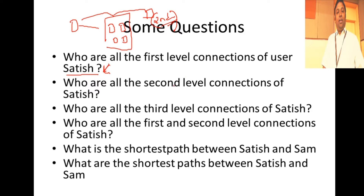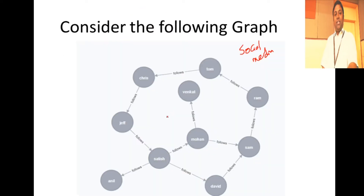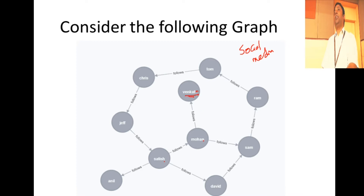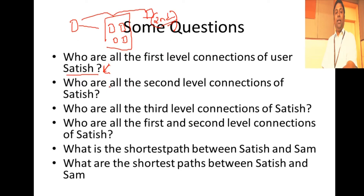What do we mean by second level connection? Satish follows Mohan; Mohan follows Venkat — so Venkat is a second level connection. Mohan is the first level and Venkat is the second. Likewise, Satish follows Mohan and Mohan follows Sam, so Sam is a second level connection whereas Mohan is a first level connection. Like that, you can go and determine the levels — the depth of your connections.